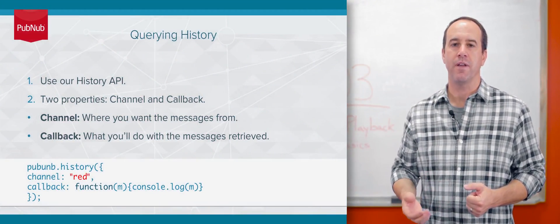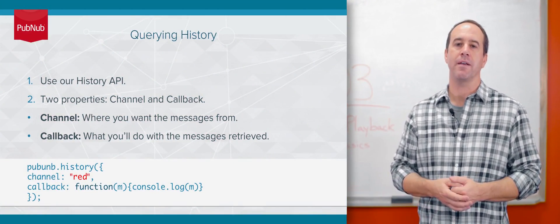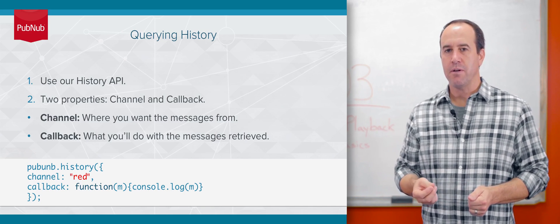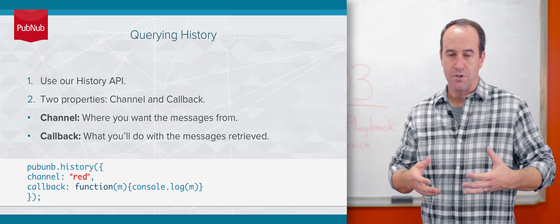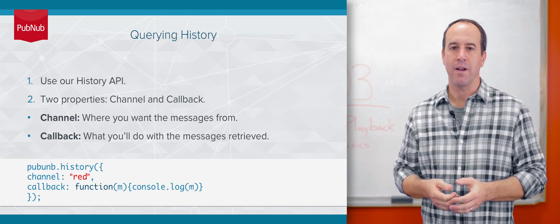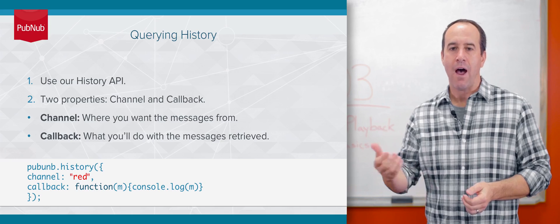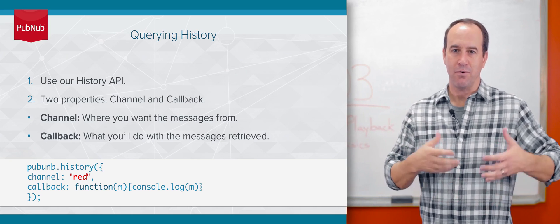Once your messages are stored, you need to retrieve them using the History API. When you call History, you need to provide at least two parameters. The first is the channel which you want to retrieve messages from. The second is the callback, how those messages will be sent back to the caller.